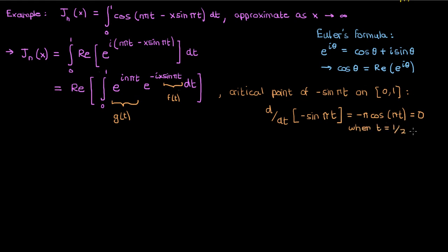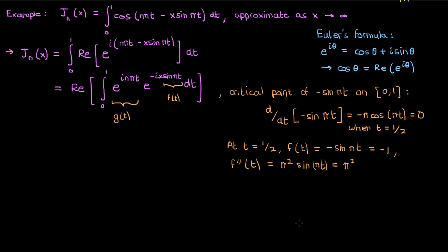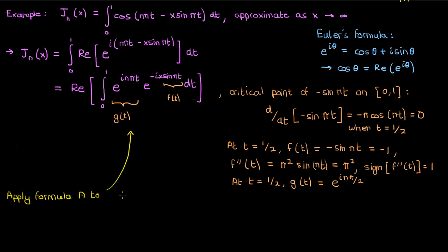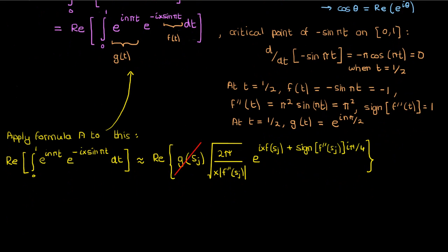Differentiating negative sine(pi t) gives negative pi cosine(pi t), which is 0 when t equals 1/2 — the only critical point between 0 and 1. At t equals 1/2, f equals negative 1. The second derivative of f, which is pi squared times sine(pi t), equals pi squared at t equals 1/2. The sign of the second derivative is 1 because it is positive. The value of g(t) at the critical point t equals 1/2 is the exponential of i times n pi over 2. Now we have everything needed to apply the stationary phase approximation formula, and substituting these values gives the resulting integral.